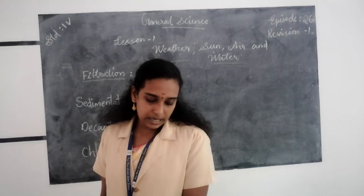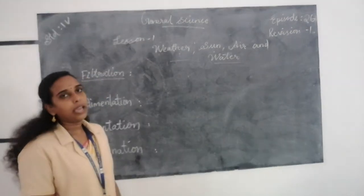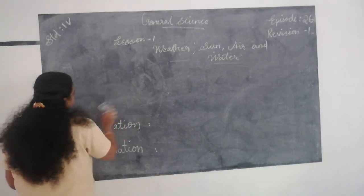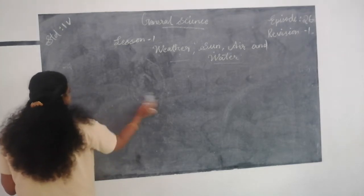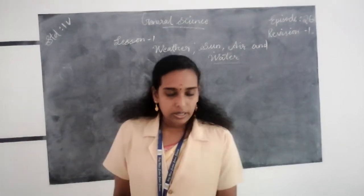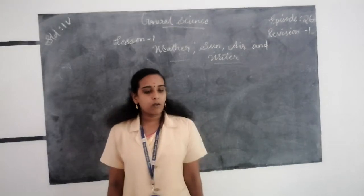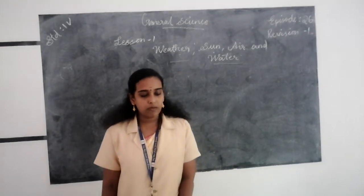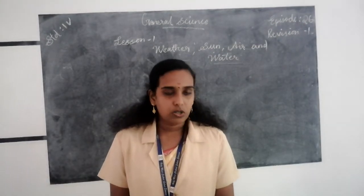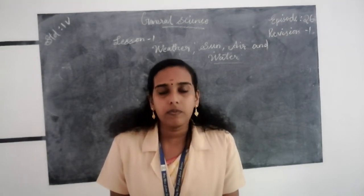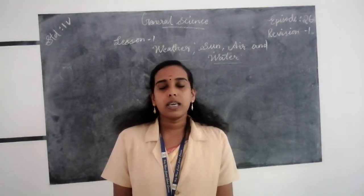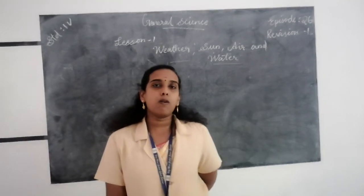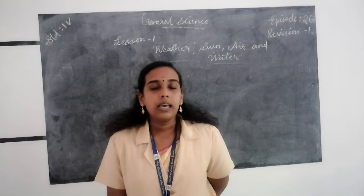These are the important things we discussed in lesson 1: weather, sun, air and water. All weather changes are caused mainly by the sun. Sea breeze means the wind flowing from sea to land, and land breeze means the wind flowing from land to sea.